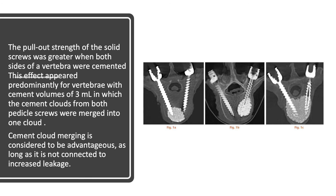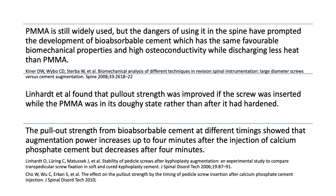Cement cloud merging is considered advantageous as long as it does not increase cement leakage risk. PMMA is still widely used, but its dangers have prompted development of bioabsorbable cements based on calcium sulfate, calcium phosphate, and hydroxyapatite, which have favorable biomechanical properties and high osteoconductivity while generating less heat than PMMA. Even with PMMA, pull-out strength improves if the screw is inserted while the PMMA is in a doughy state rather than after hardening. For bioabsorbable calcium phosphate cement, augmentation power increases up to 4 minutes after injection but decreases thereafter.